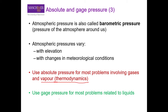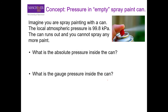Here is a concept question to check your understanding of absolute and gauge pressure. Imagine you are spray painting with a can, the local atmospheric pressure is 99 kilopascal, and the can runs out so you cannot spray anymore. What is the absolute pressure inside the can? The answer is 99 kilopascal, because the can was filled at atmospheric pressure — the atmosphere was exerting the same pressure on the liquid when it was manufactured, so the inside pressure equals atmospheric pressure.